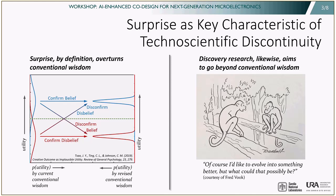Let's now consider the nature of these discontinuities, particularly for technoscientific evolution. What is the essential feature of a technoscientific discontinuity? The essential feature is that it couldn't have been predicted within the knowledge domain itself. If it could have been predicted within that knowledge domain — if it were consistent with the conventional wisdom — then the change would be more continuous and less discontinuous. In other words, the essential feature of a technoscientific discontinuity is that conventional wisdom is surprised.